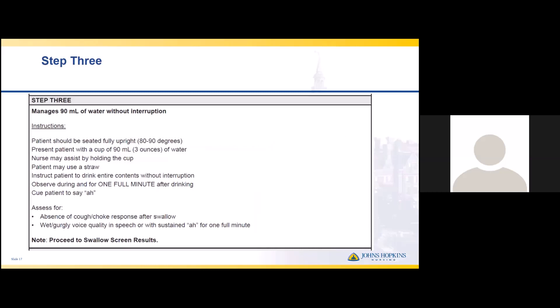If the patient passes all prior steps, proceed to step three: determining whether the patient can manage 90 milliliters of water without interruption. We want them to drink continuously — not sipping and talking alternately. Ensure the patient is still at 80 to 90 degrees, present them with a cup of water, and instruct them to drink the entire contents without interruption. They may hold the cup or you can hold it; a straw may or may not be used. Observe for a full minute, cuing the patient to say 'ah' at the end. If at any point during that minute the patient coughs or has a wet gurgly voice, they fail — make them NPO and get SLP involved.